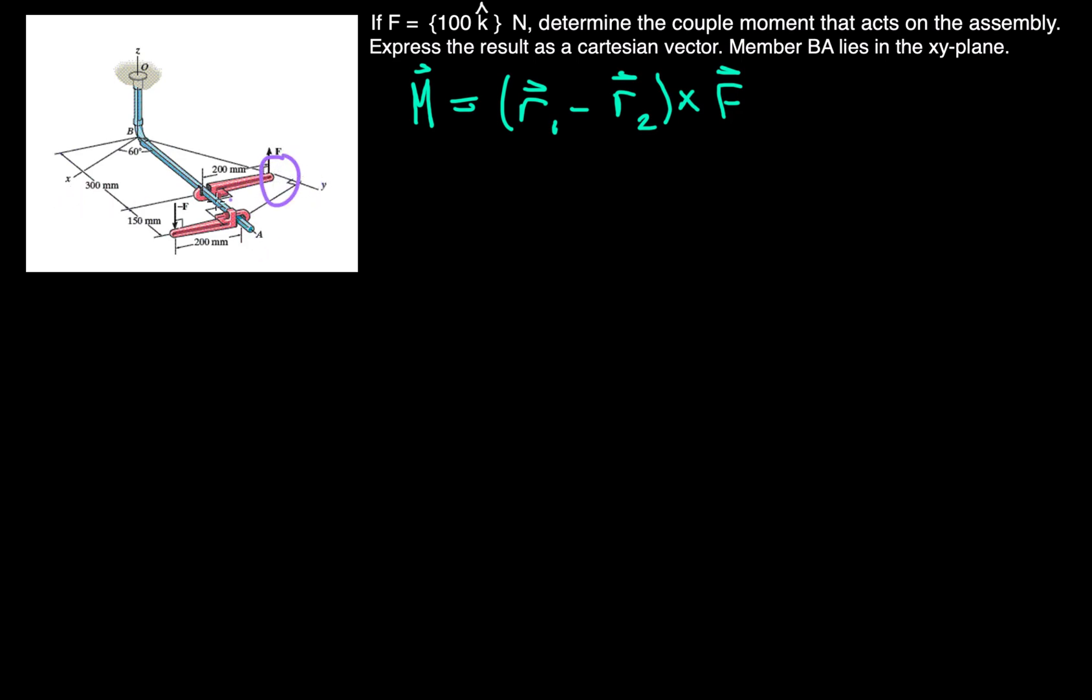And one key point to notice before we start on that is that here, our red bar, our wrench, is actually passing over this y-axis here. So it's actually passing into the plane over here in the negative x. And so just keep that in mind when solving this problem, because it will make our analysis a bit more complicated.